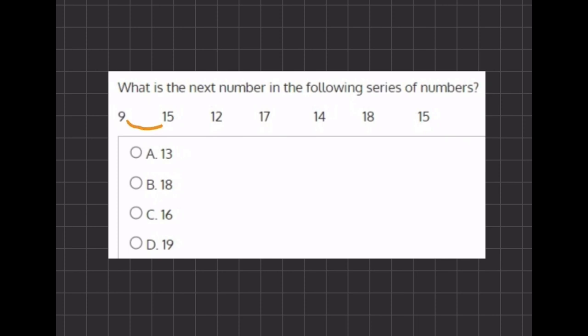So let's begin with the transition of 9 and 15. It seems like going from 9 to 15 we are adding 6. And the transition from 15 to 12 seems like we are subtracting by 3.